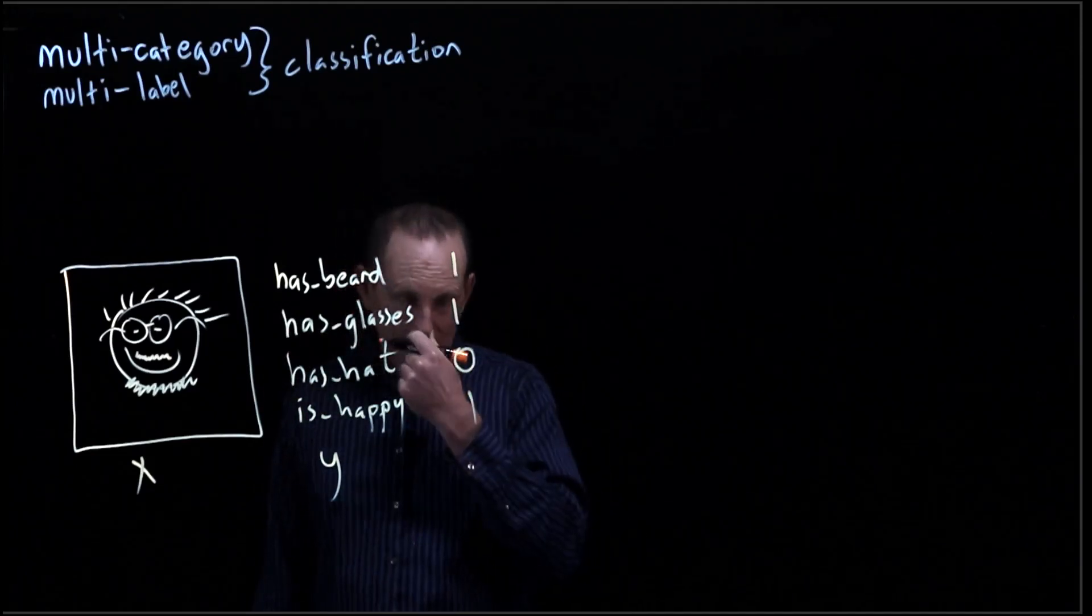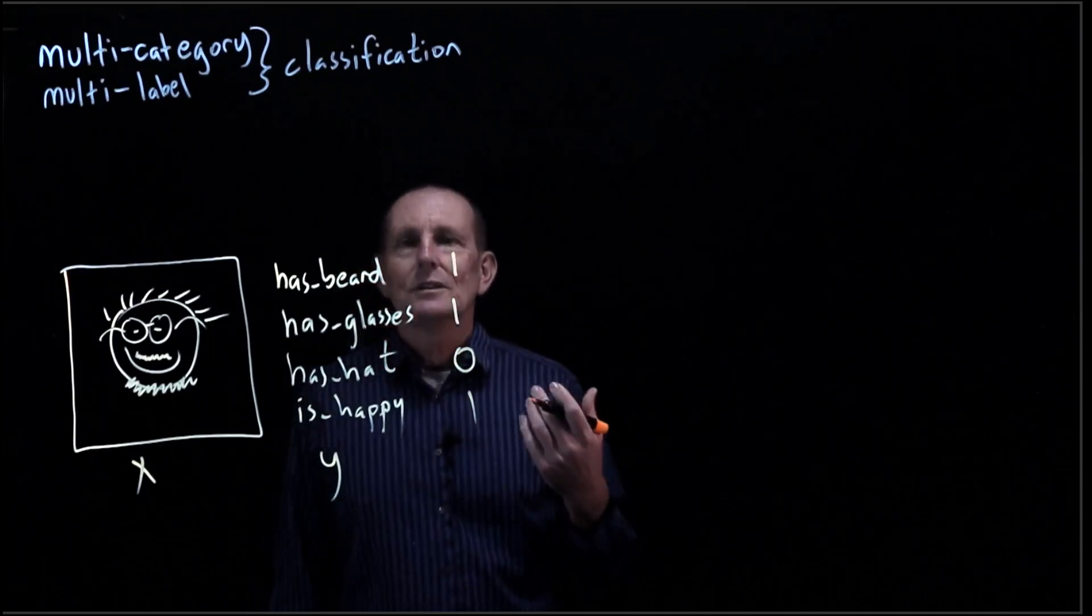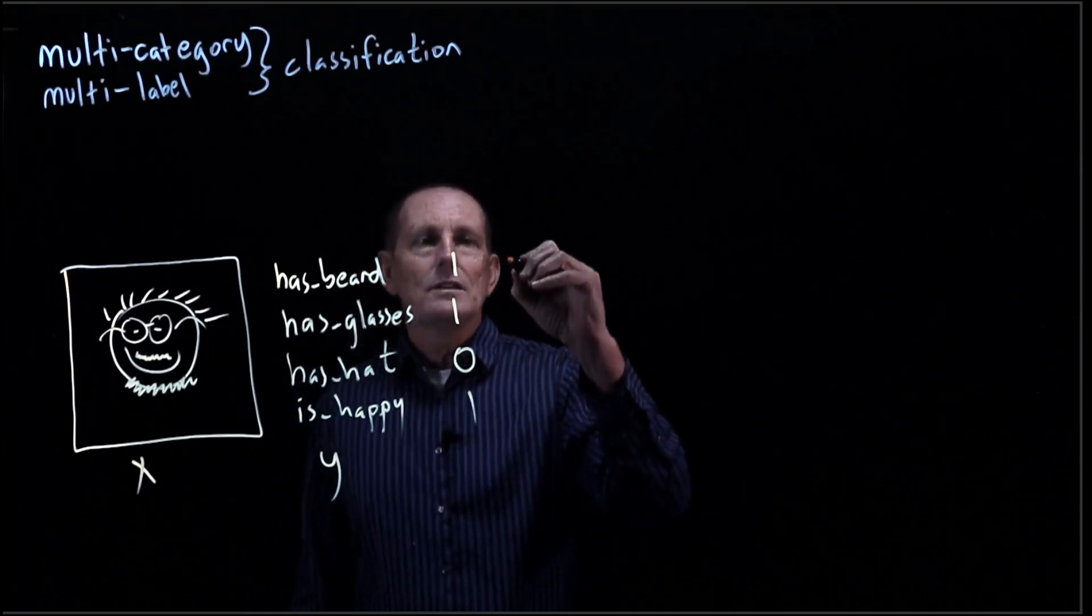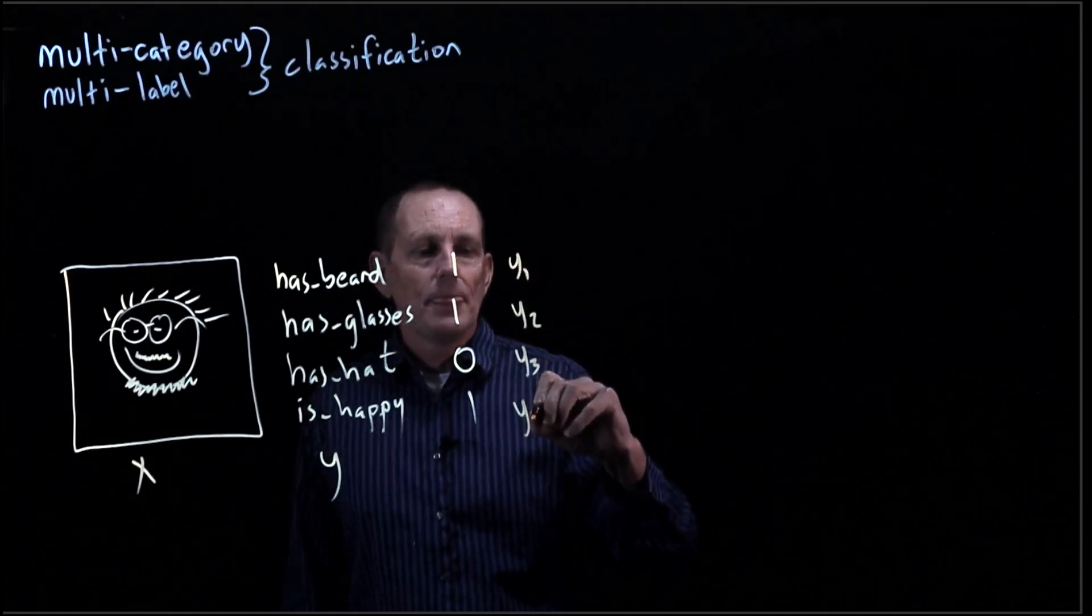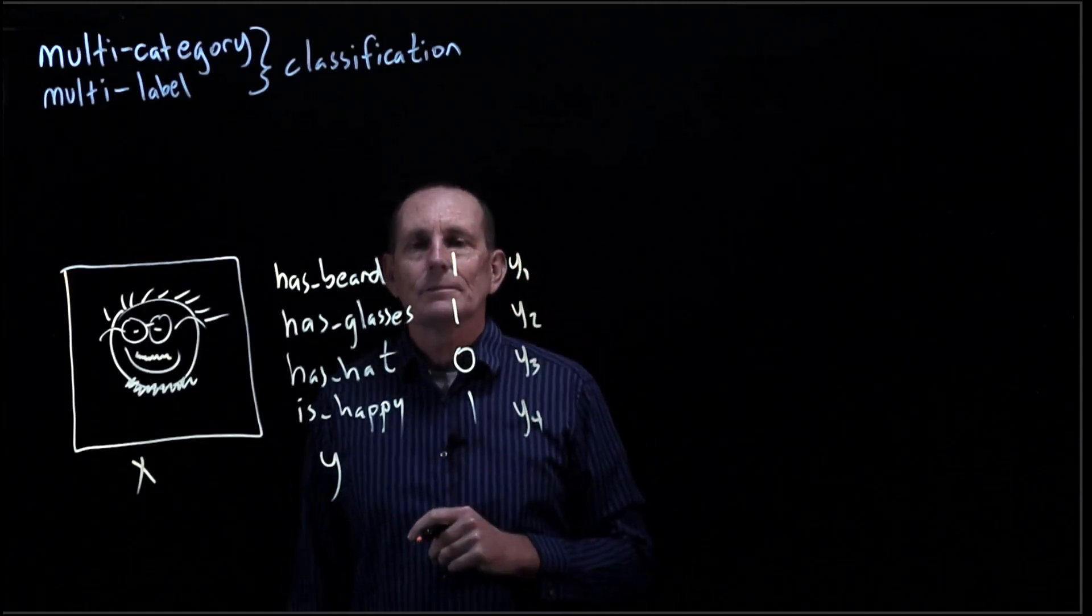So our f can be outputting basically y1, y2, y3, and y4 for our function.